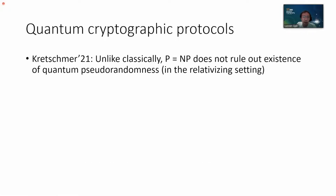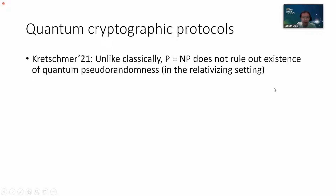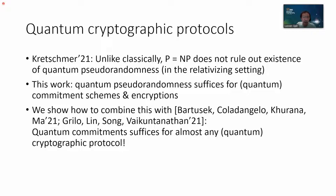Therefore, there are no such barriers to proving security for a lot of quantum cryptography protocols. More concretely, Kretschmer showed that unlike classically, there is a quantum oracle relative to which P equals NP, but quantum pseudorandomness of some form still exists. In this work, we show that this same form of quantum pseudorandomness suffices for constructing quantum commitment schemes and quantum one-time encryption.